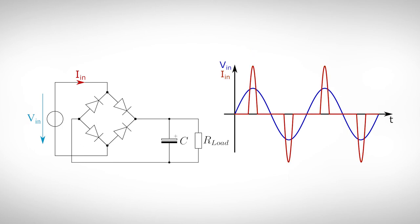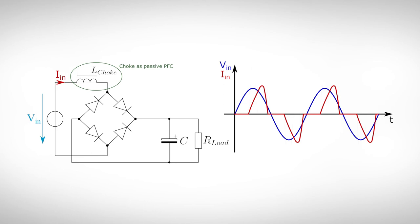To dampen this high current peak, we can use active or passive power factor correction circuits. Passive PFC circuits are basically filters, which are optimized for the used frequency, in our case 50Hz. Because of the low frequency, the used parts are often big and bulky. They dampen the peak of the current a little bit, but not ideal. Passive PFCs are often used for low power applications.